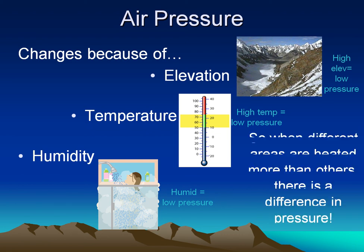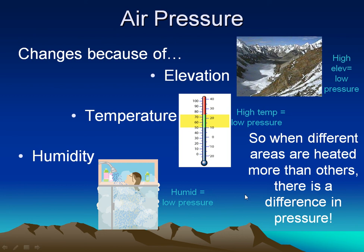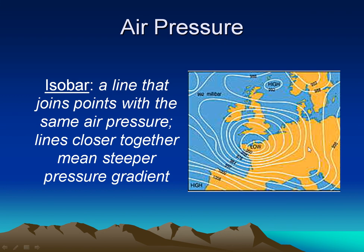What does this mean? When different areas are heated more than others, or have different elevations or different humidities, you end up with differences in pressure. And differences in pressure are what cause wind. Here's a map showing our air pressure. As we discussed during mapping, we can map it much the way we do a topographic map — only this time, instead of the lines showing elevation, they're showing pressure.